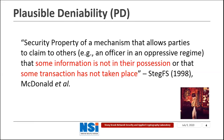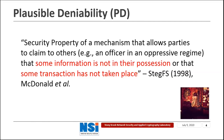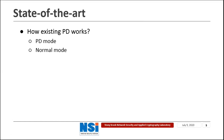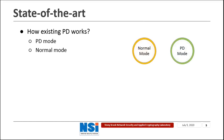Plausible Deniability is such a tool that can help us protect our sensitive data. Plausible Deniability is a security property of a mechanism that allows parties to claim to others that some information is not in their possession or that some transaction has not taken place. People have designed several PD schemes. Let's see how those existing PD schemes work. Currently, people design PD schemes with two modes: the normal mode and the PD mode.